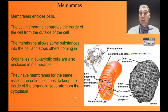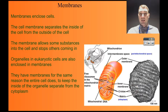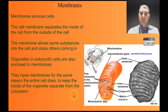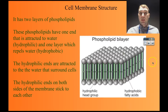In eukaryotic cells, you also have membrane-bound organelles like the mitochondria. Here's a mitochondrion — it has an outer membrane and an inner membrane. Same purpose there: maintaining a different concentration of substances inside the mitochondrion compared to the outside, and that allows them to do their job.